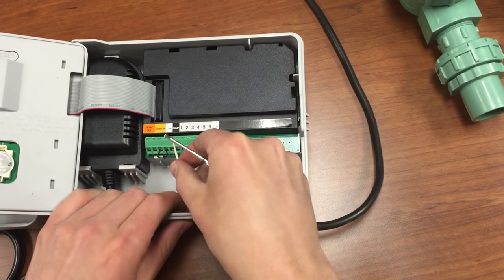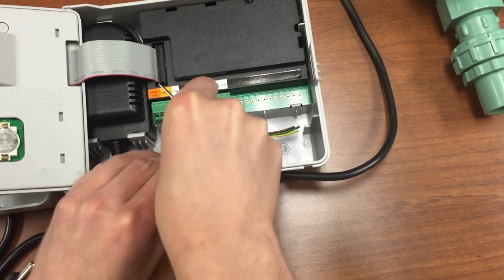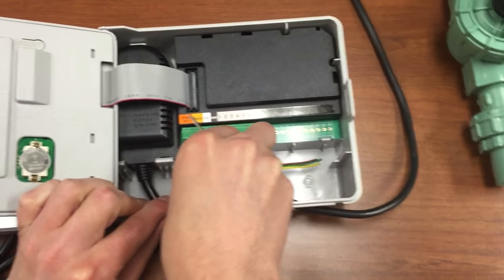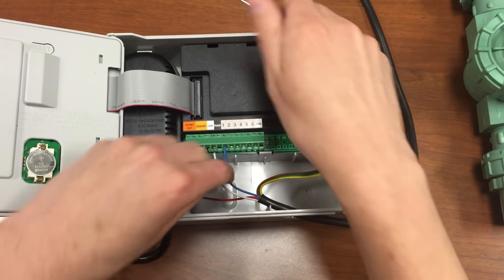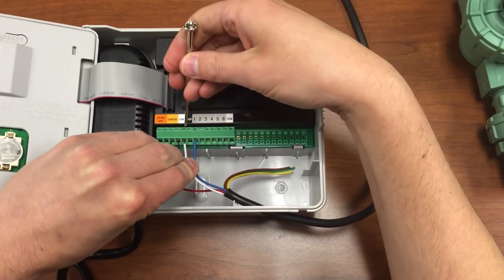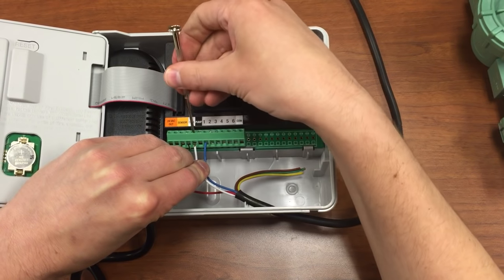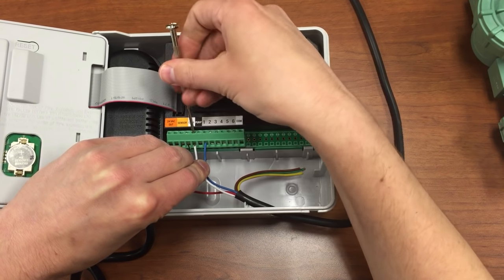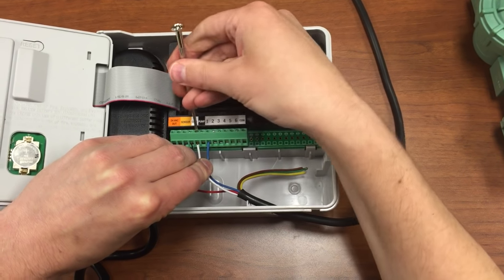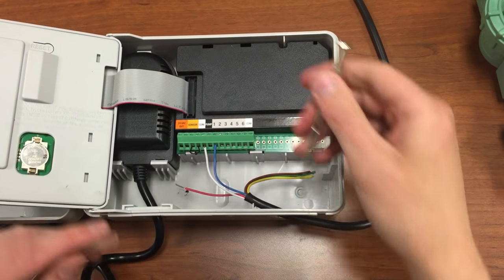Now, remember the white wire was used as the common wire, and so we'll do the same thing with the common. Again, make sure it's inserted well. Tighten that down, just give it a little pull to make sure it's in there, and it is.